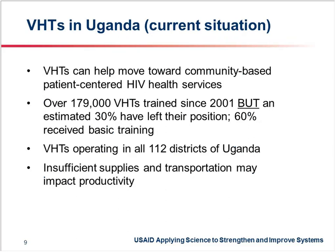Since the study, we found that VHTs can help move towards community-based patient-centered HIV health services. There have been approximately 179,000 VHTs trained since 2001, but about 30% have left their position. There is national coverage with VHTs operating in all 112 districts of Uganda, and research indicates that insufficient supplies and transportation may impact their productivity.